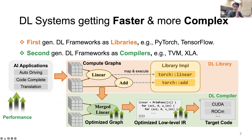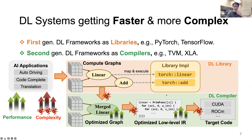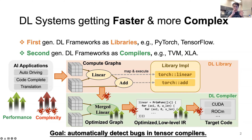So while tensor compilers bring better performance, the software stack is becoming extremely deep and complicated. That means there can be many bugs in it. Our motivation is basically to see how to automatically detect bugs in tensor compilers using fuzz testing.